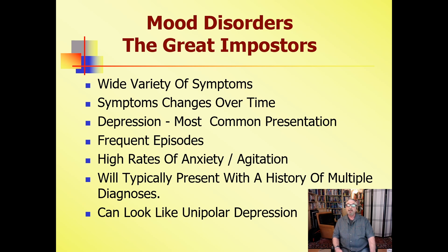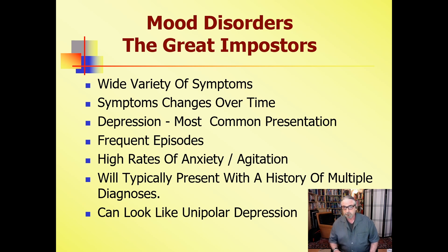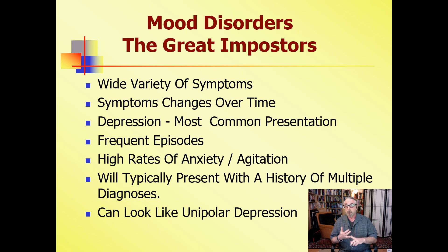They can have very high rates of anxiety and agitation, so they frequently get diagnoses for anxiety disorders. They will typically present with a history of multiple diagnoses. If I see someone who's been going to doctors for five, six, seven, eight years, they will have been given the diagnoses of depression, anxiety disorders, depression with anxiety, post-traumatic stress disorder, obsessive-compulsive disorder — and all too frequently, they'll get the diagnosis of borderline personality disorder.